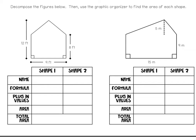For the first shape, we need to divide it into two shapes, so I'm going to draw a dotted line here. I've divided the shape into a rectangle and a triangle. The formula for a rectangle is base times height, so I'm going to plug in the values: a base of 9 and a height of 8. Nine times 8 gives us 72.